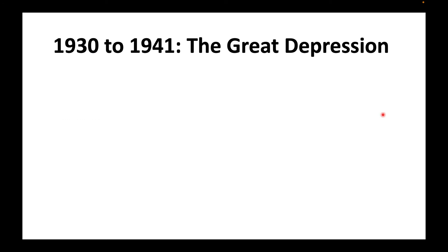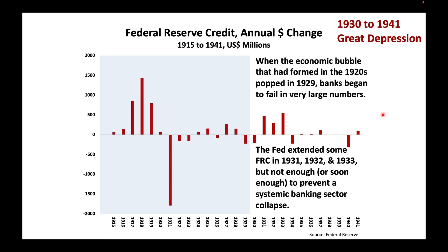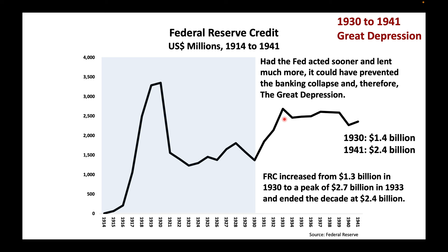During the Great Depression, when the economic bubble that had formed in the 1920s popped in 1929, banks began to fail in very large numbers. The Fed extended some Federal Reserve credit in 1931, 1932, and 1933, but not enough or soon enough to prevent a systemic banking sector collapse. Had the Fed acted sooner and lent much more, it could have prevented the banking collapse and, therefore, the Great Depression. Federal Reserve credit increased from $1.3 billion in 1930 to a peak of $2.7 billion in 1933 and ended the decade at $2.4 billion.